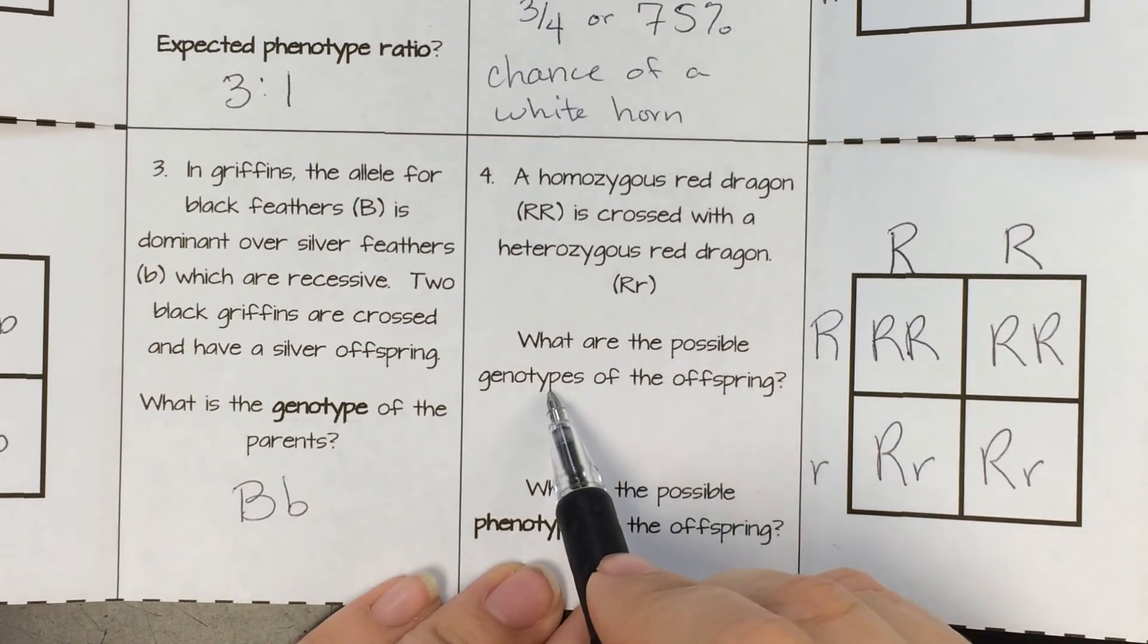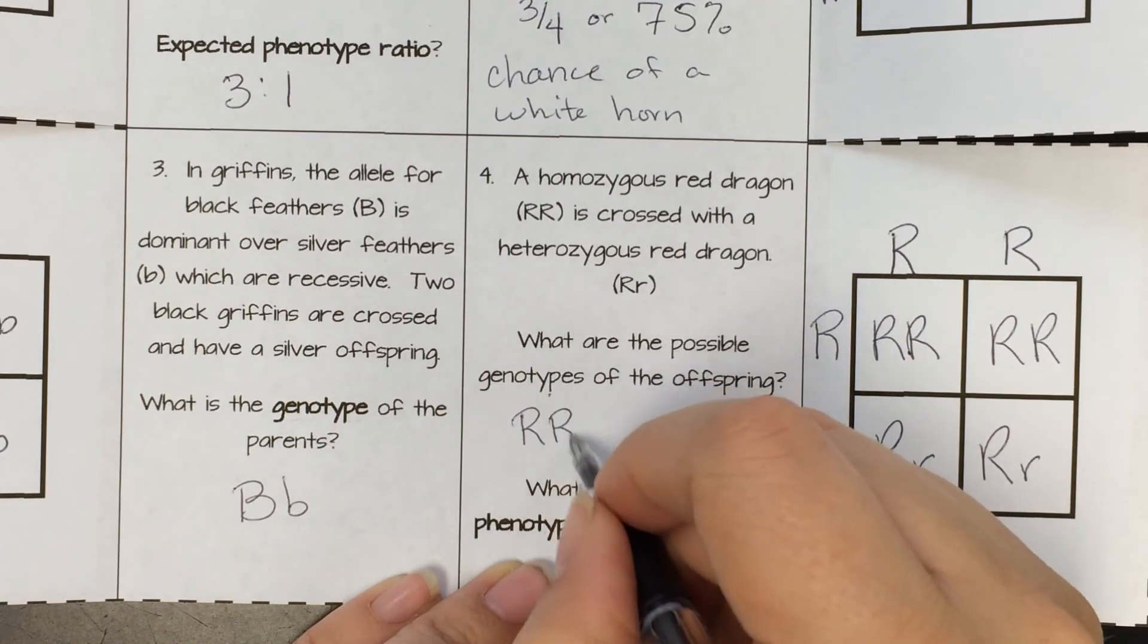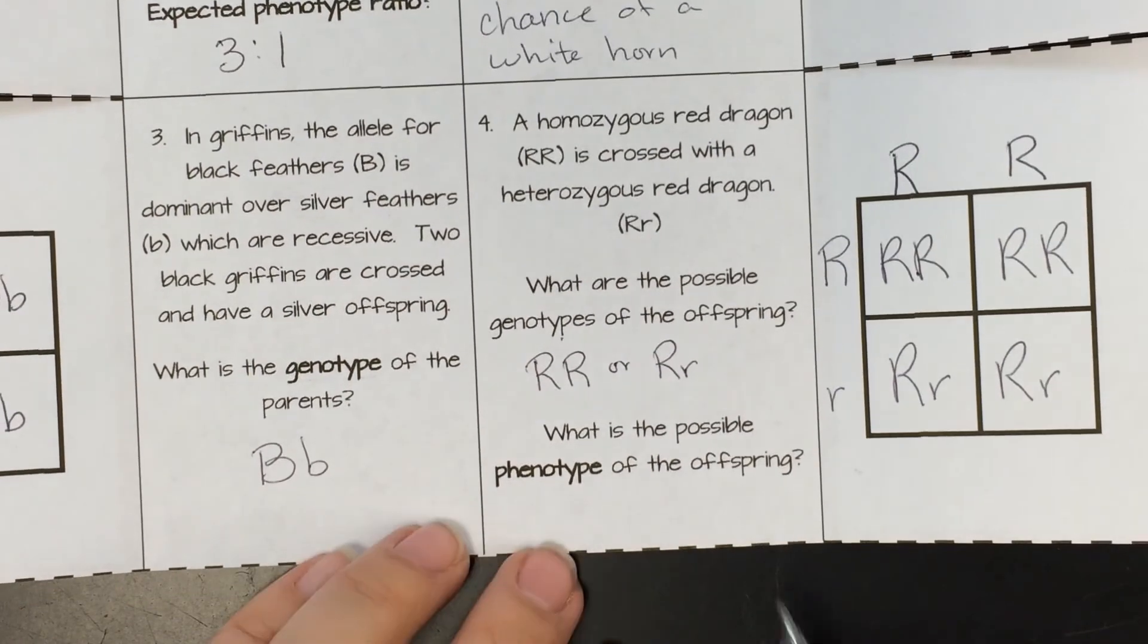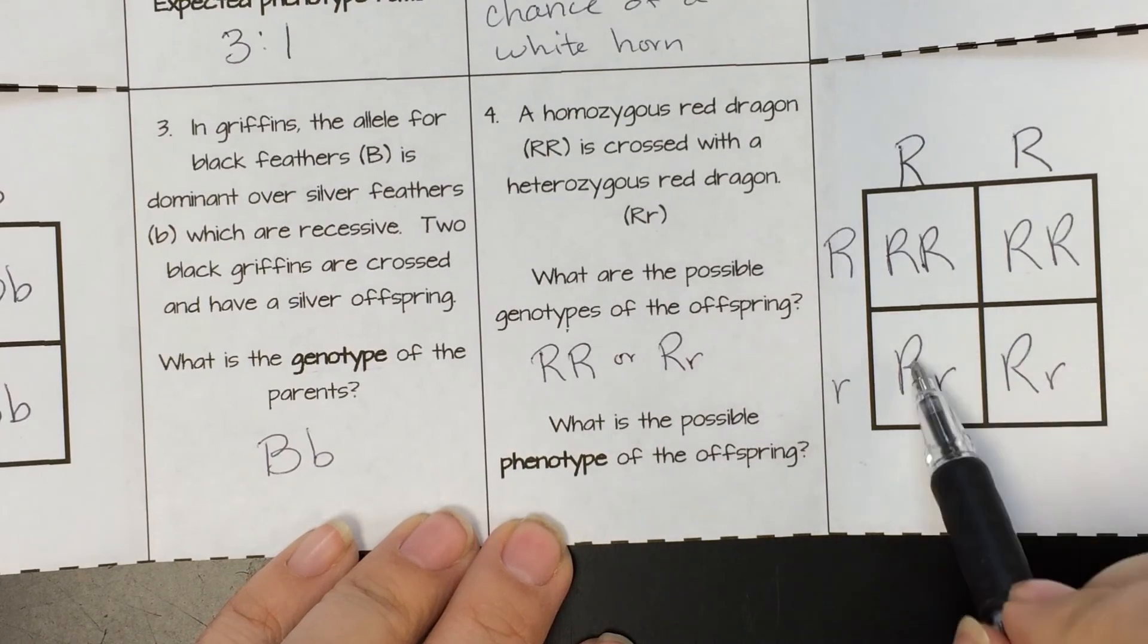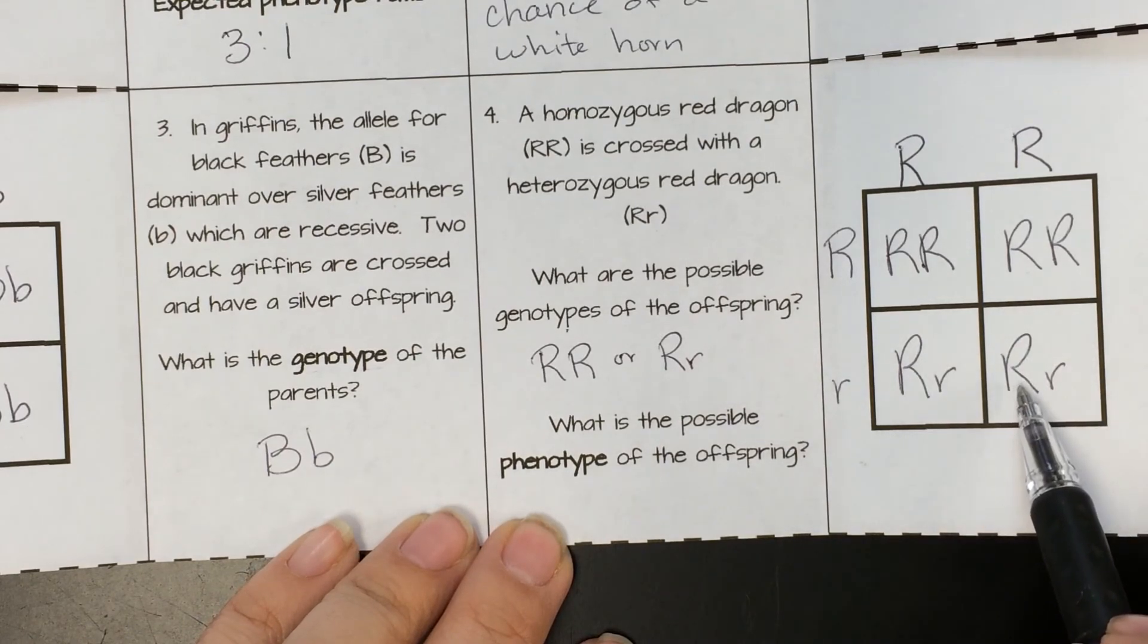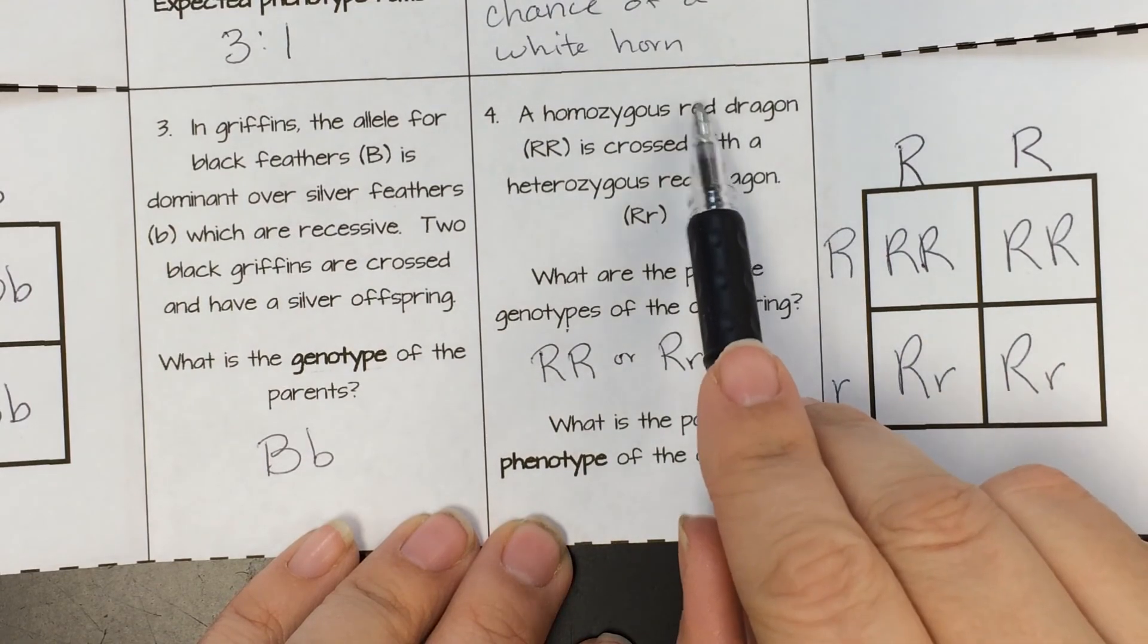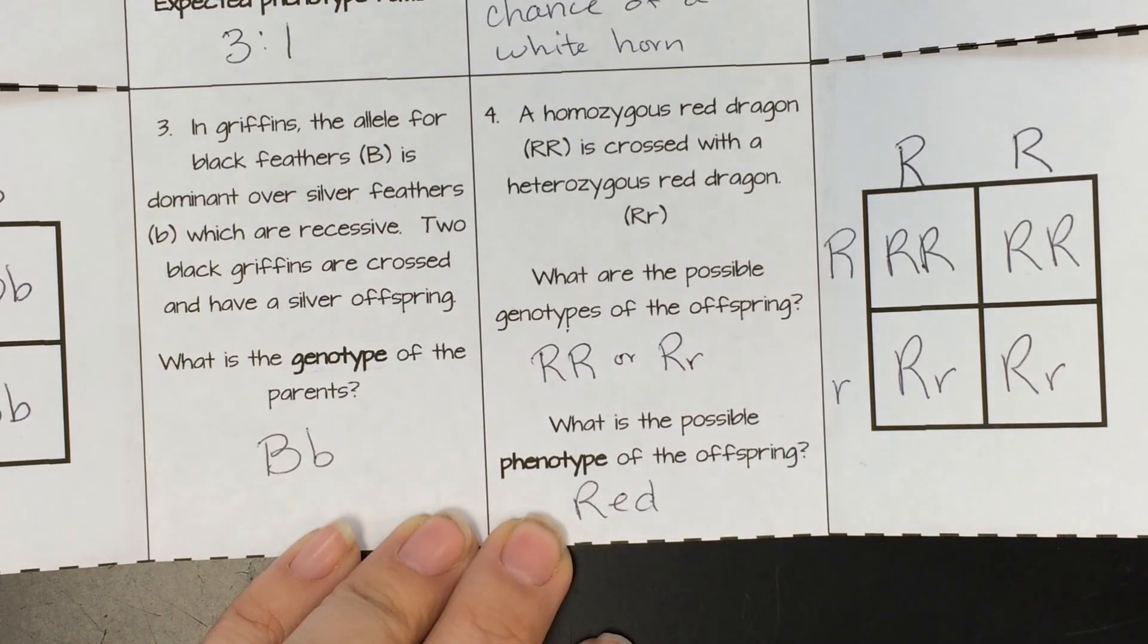So the possible genotypes, that's looking at just the genetics. Our two possible genotypes, we could have big R, big R, or big little. And what is the possible phenotype of the offspring? Since none of the offspring are homozygous recessive, that means little r, little r, they all carry the dominant trait. And our dominant trait, again, is red. So all of our offspring would appear as red.